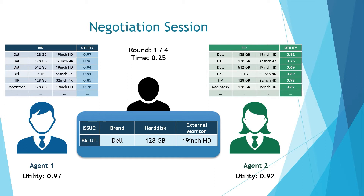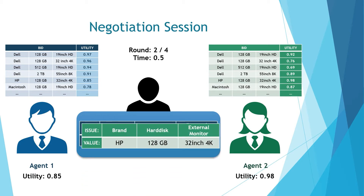After agent one offers a bid, agent two can accept the bid or make a counter offer. She may think it is too early to decide if the bid is acceptable, so let's assume she does not accept and makes a counter offer. Agent one can then accept the bid or make a counter offer. As mentioned, he does not know the utility of agent two — he only knows his own utility — and let's assume he decided to make a counter offer instead of accepting.